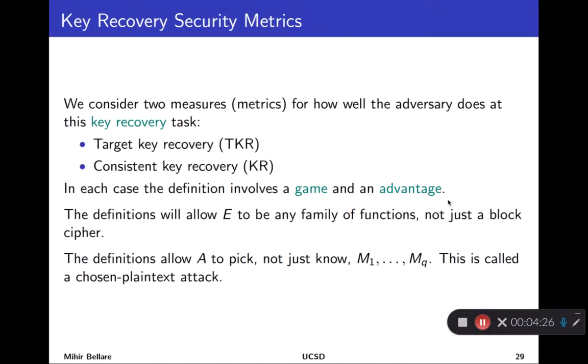So we are now going to formalize this, and we'll see what it means to formalize it. We'll use something called games. When we do that, we'll see that there are actually multiple possible formalizations, and we'll be interested in two of them. One of them is called target key recovery, and the other is called consistent key recovery. But since the latter is what we'll almost always use, I'll just call it key recovery. And in each case, the definition involves something we call a game, and a number associated to an adversary we call an advantage. The bigger this number, the better the adversary did.